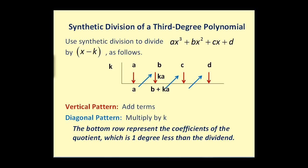For an explanation of synthetic division, we'll discuss synthetic division of a third degree polynomial divided by x minus k. The first step is to list the coefficients here and list the value of k here. It's important to note that k is found by having the binomial in the form of x minus k — so if this was x minus three, k would be three.